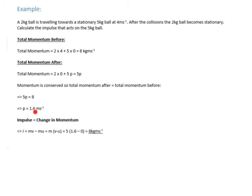But anyway, you end up with a velocity of 1.6. You multiply the velocity by the mass, gives you the momentum. The change in momentum is 8 kilogram meters per second. Impulse is the change in momentum, therefore the impulse is 8 kilogram meters per second.